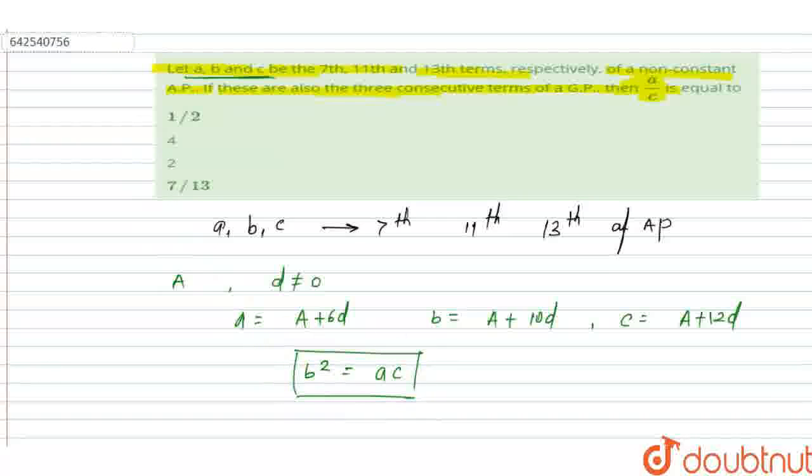Now put the values of b, a, and c. The value of b is (A + 10d)² equals (A + 6d)(A + 12d).